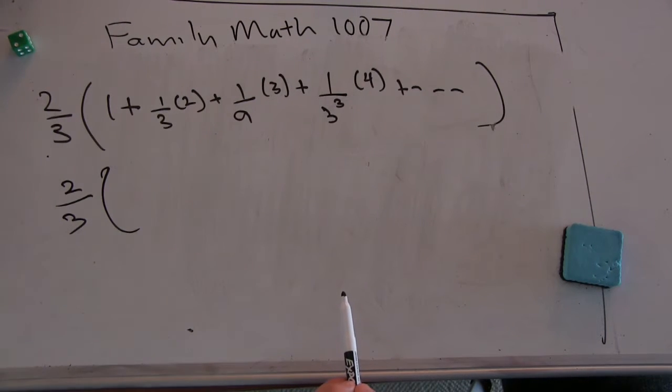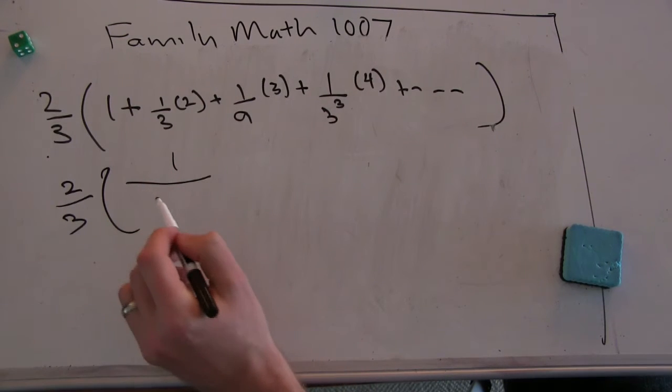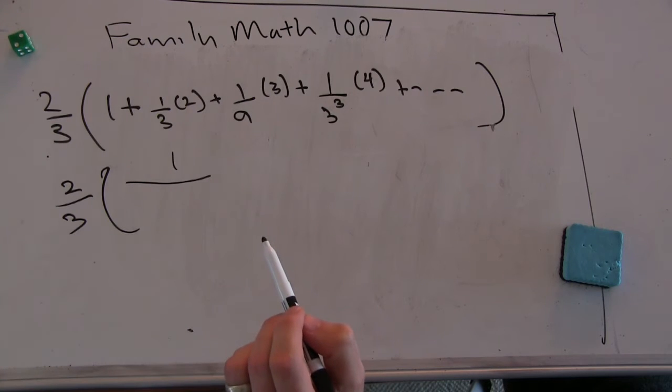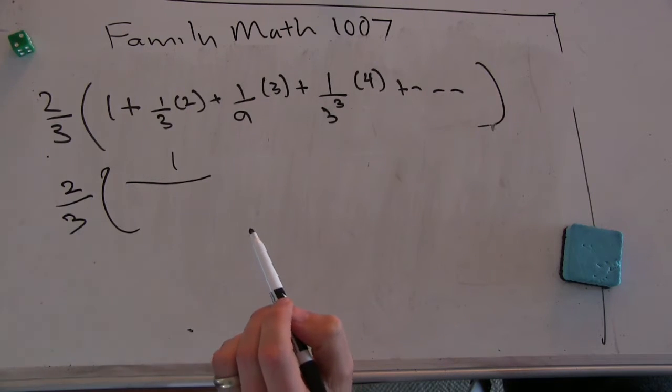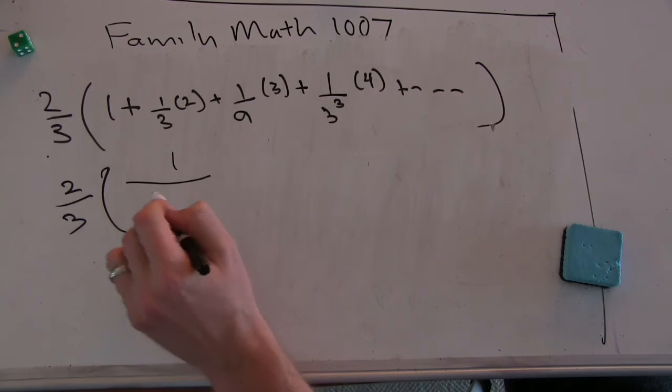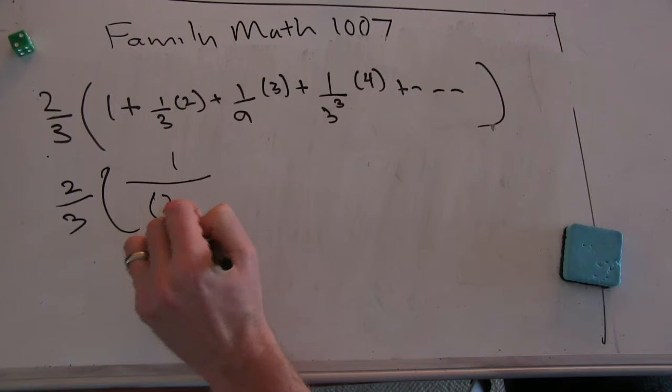So it would be one over one-third squared, is one, one over one, or one over one minus a third squared. Yep, so what is that? One minus a third is two-thirds, so two-thirds squared, four-ninths.